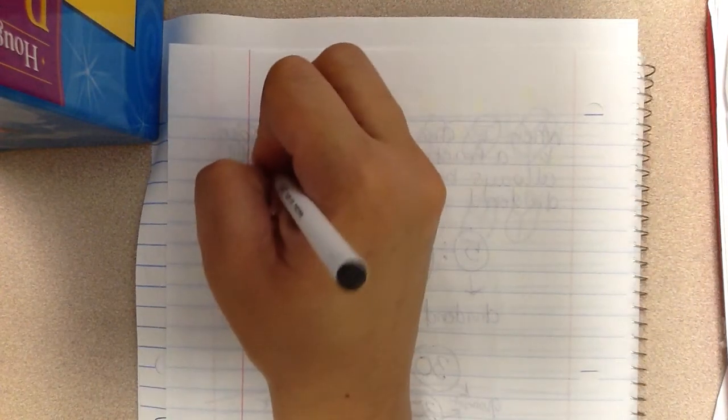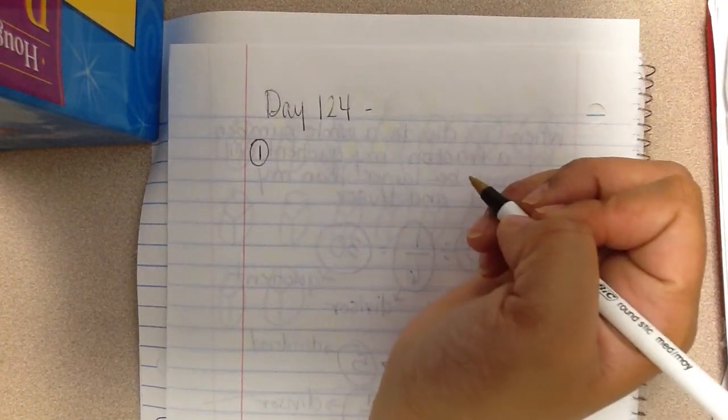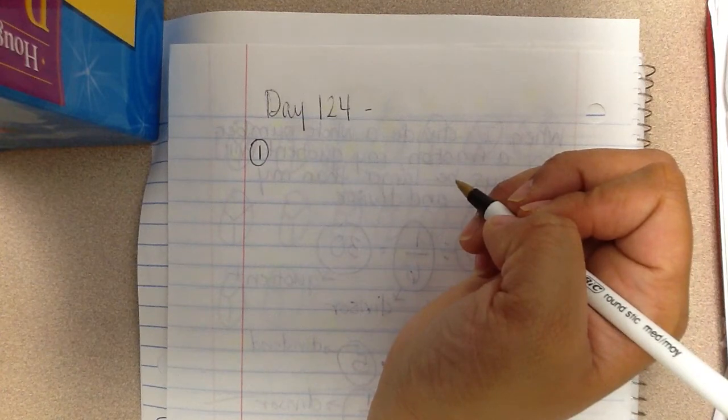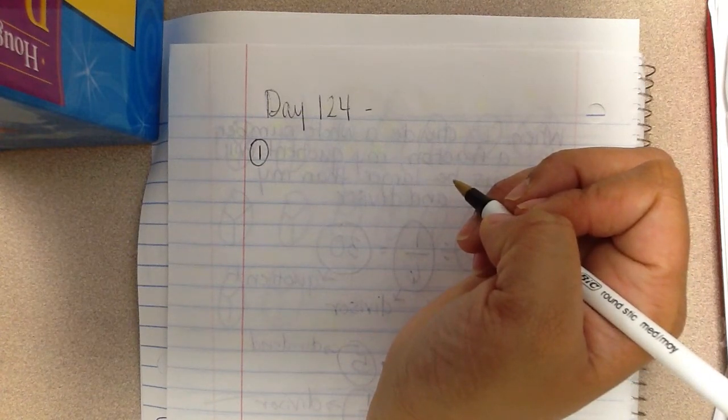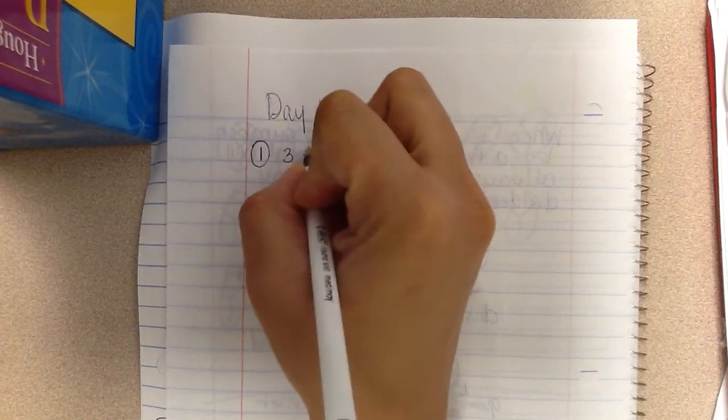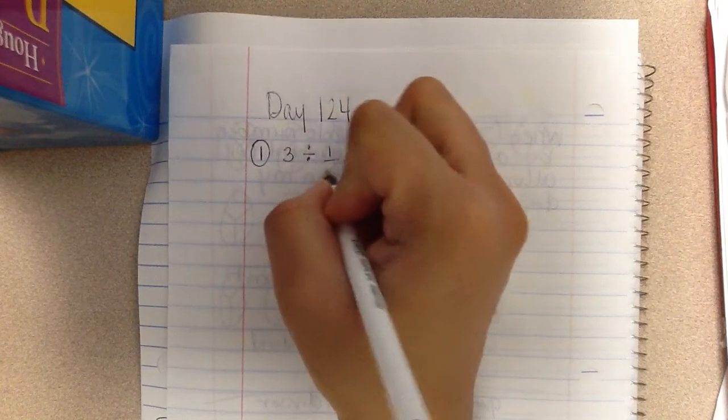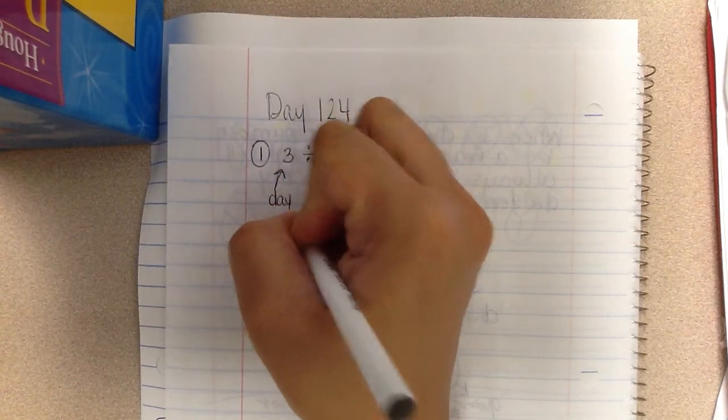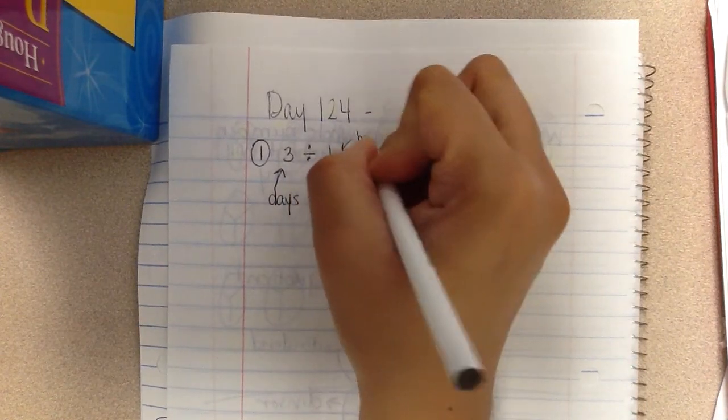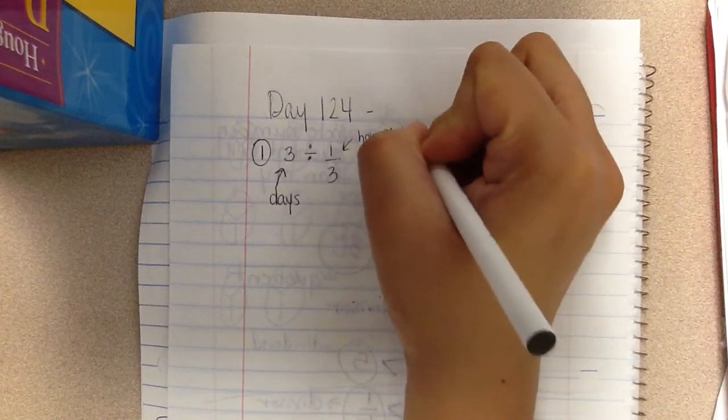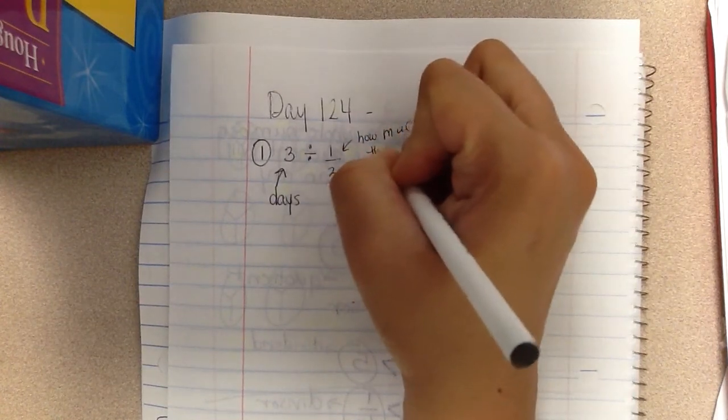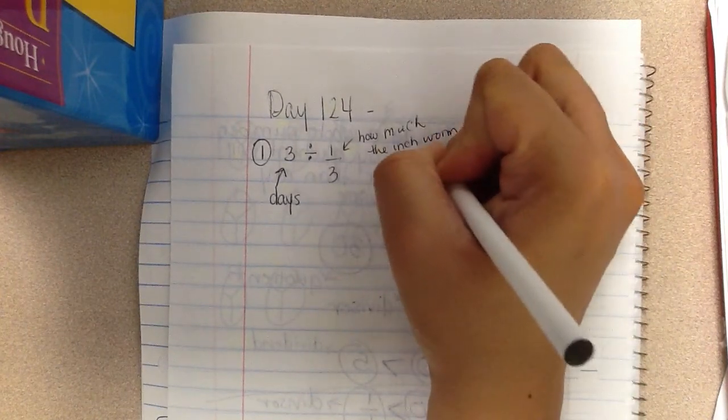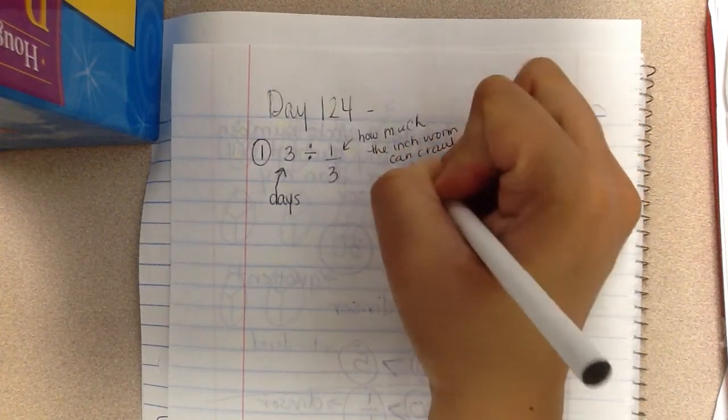We're going to look at number one first. Number one says an inchworm can crawl one third of a meter each day. How many days does it take the inchworm to crawl three meters? So I want to divide three divided by one third because this is the amount of days they want to give the inchworm to crawl, and this is how much the inchworm can crawl each day.